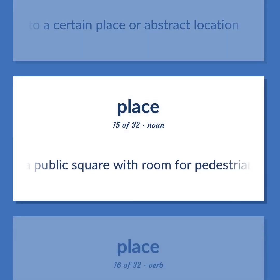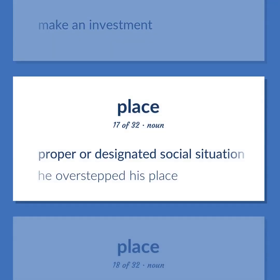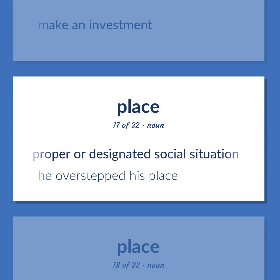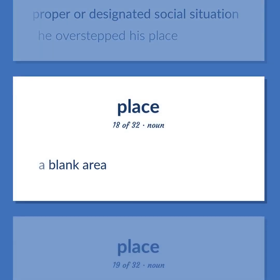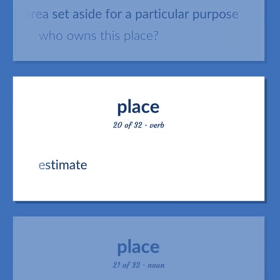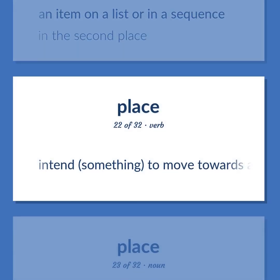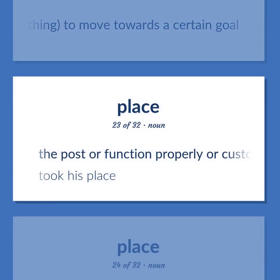Place: A public square with room for pedestrians. Make an investment. Proper or designated social situation — 'He overstepped his place.' A blank area. Any area set aside for a particular purpose — 'Who owns this place?' Estimate. An item on a list or in a sequence — 'In the second place.' Intend something; to move towards a certain goal. The post or function properly or customarily occupied or served by another — 'Took his place.'